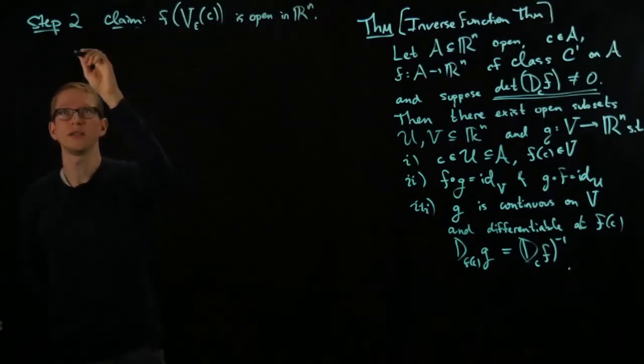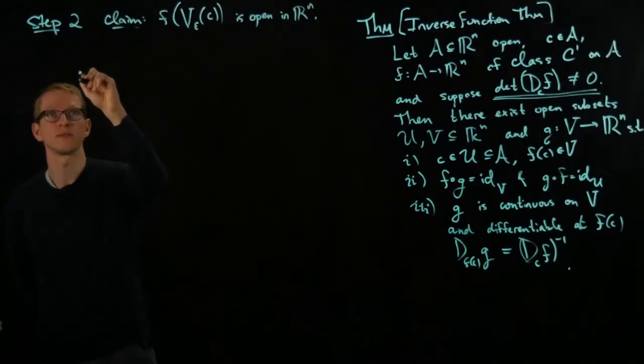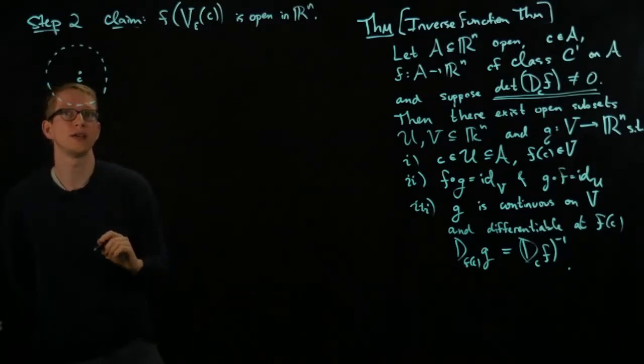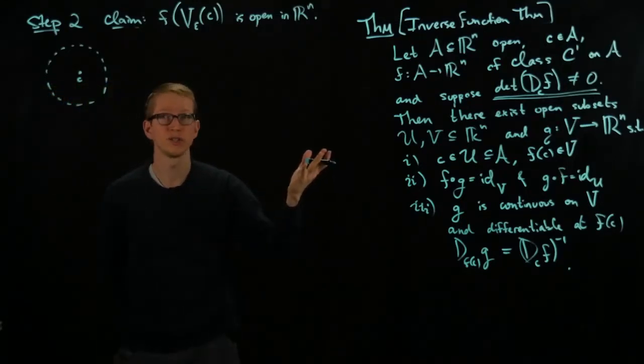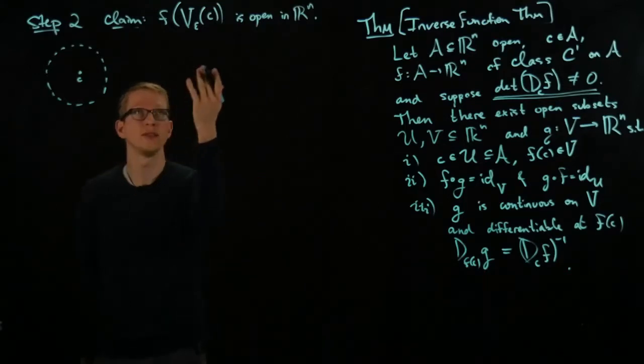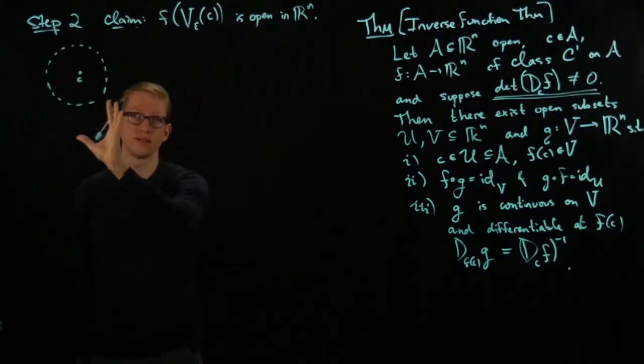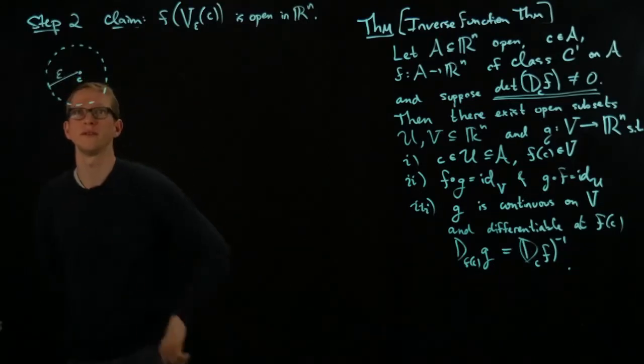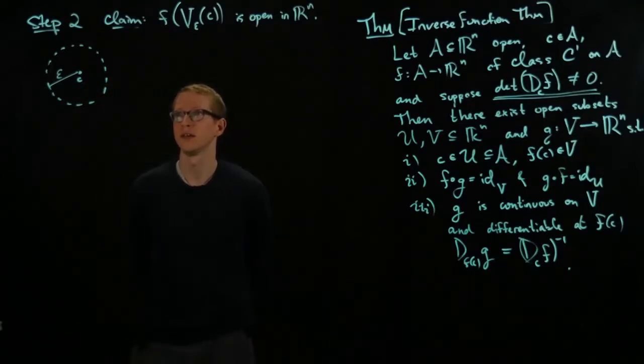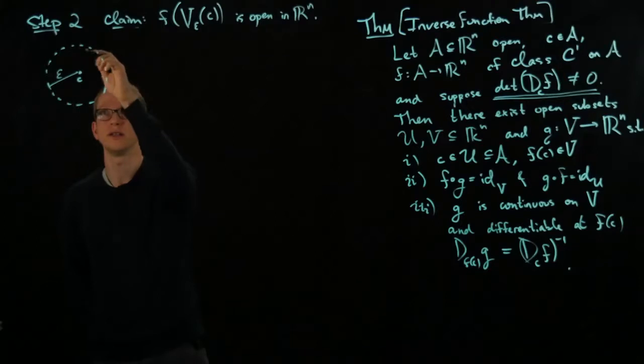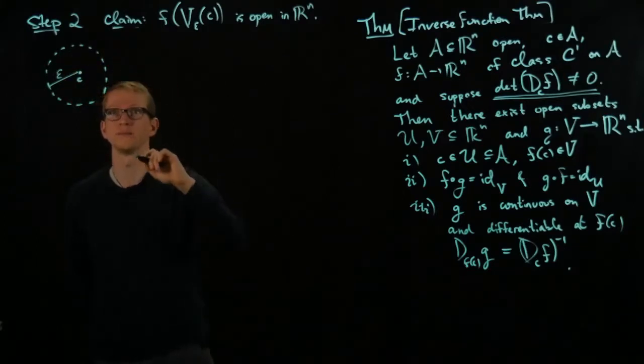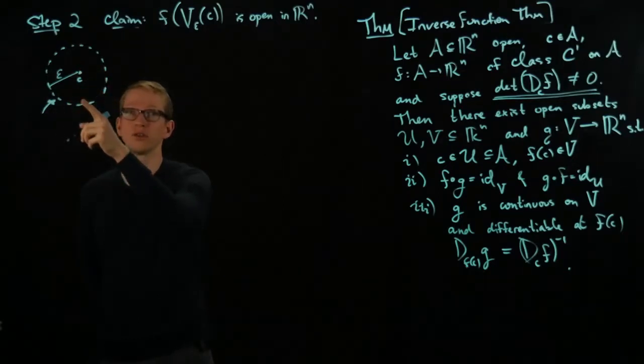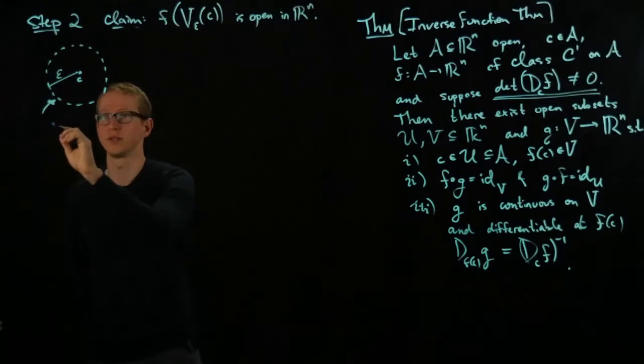So what we're going to do is we're going to draw the neighborhood around C. And again, we can assume that since the domain of the function A is open, we can assume that this epsilon is small enough so that this is completely contained inside of A. So here's epsilon. And the closure of this ball includes this boundary as well.